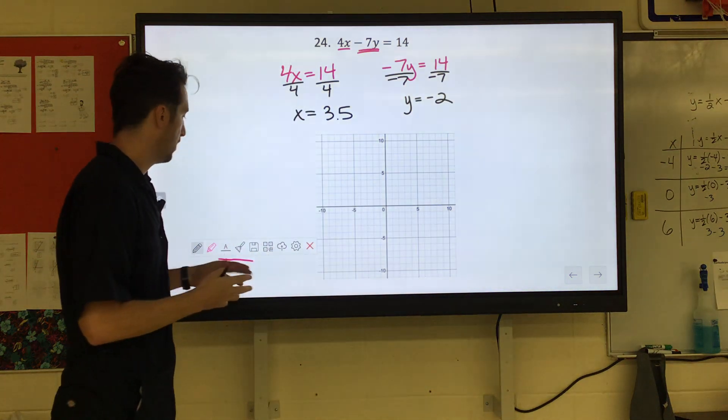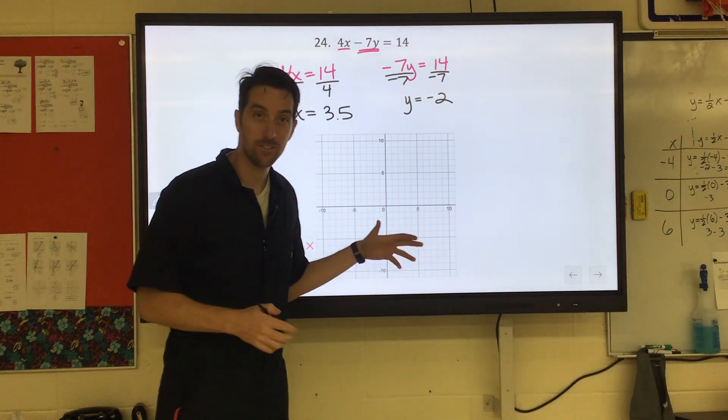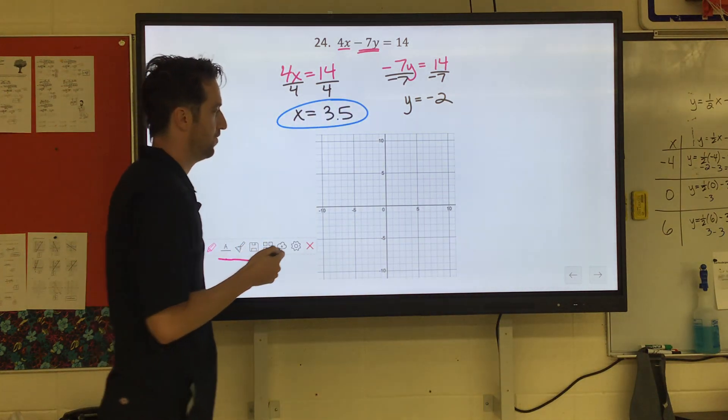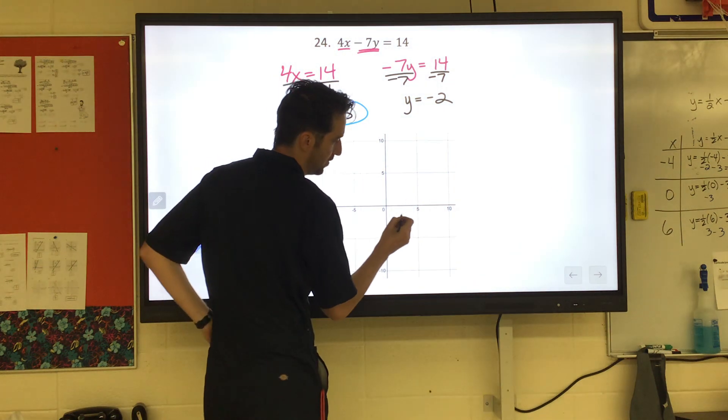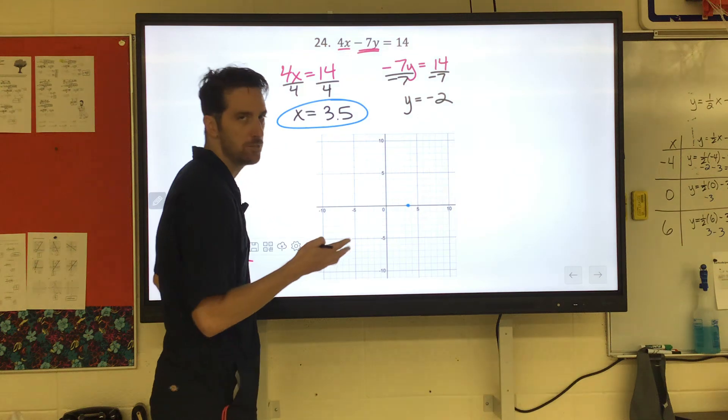So these are our x and y intercepts. Now that flat axis is the x-intercept, and it says it's crossing that intercept at 3.5. That would be to the right because it's positive 3.5, about there, halfway between 3 and 4.